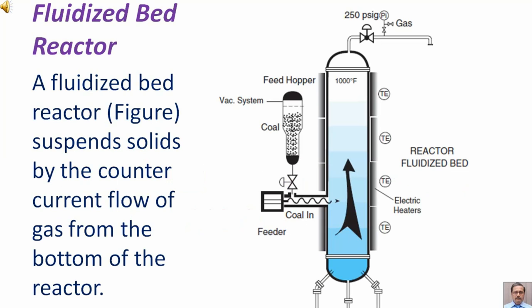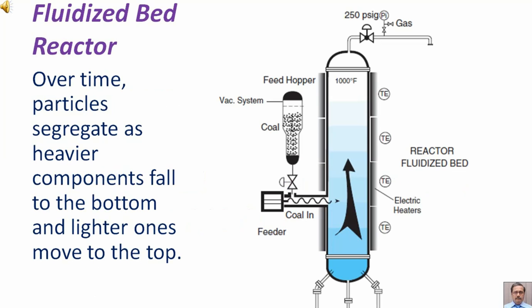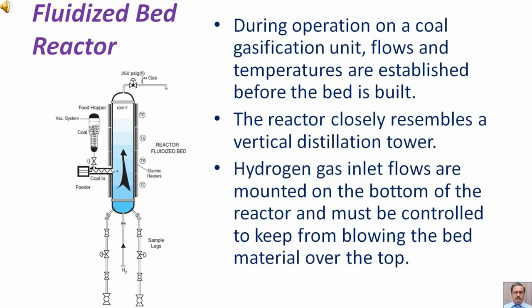A fluidized bed reactor suspends solids by the counter-current flow of gas from the bottom of the reactor. Over time, particles segregate as heavier components fall to the bottom and lighter ones move to the top. This behavior is observed at the bottom of the reactor during operation of a coal gasification unit.